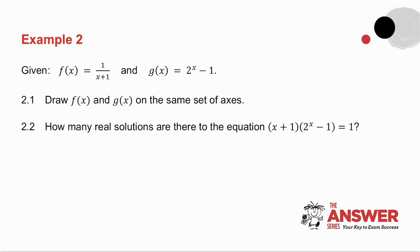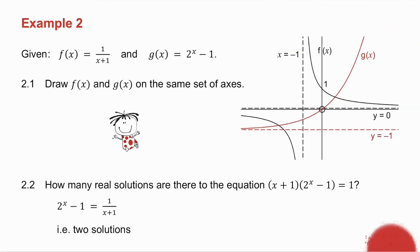Example number 2. I've given you two graphs and asked questions on them — pause the video and try this, then we'll do it together. f of x is a hyperbola with asymptotes at y equals 0 and x equals minus 1, and a y-intercept at 1. The other f of x is an exponential with asymptote at y equals minus 1 and it passes through the origin — that covers question 2.1.